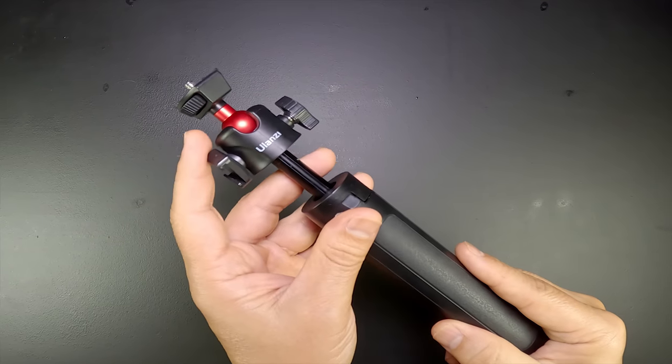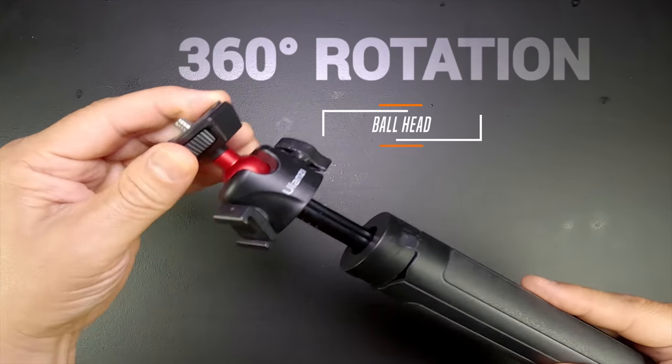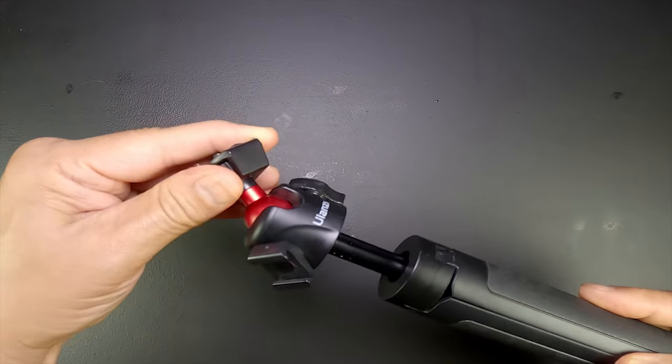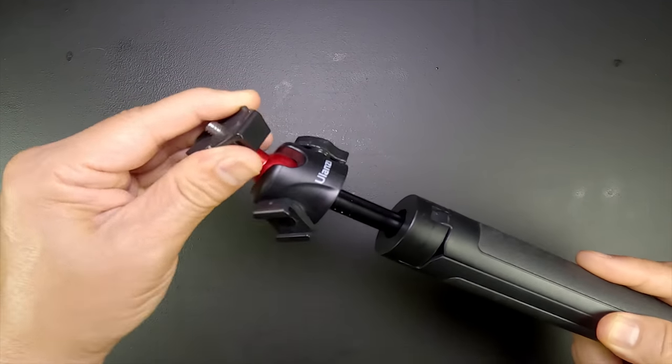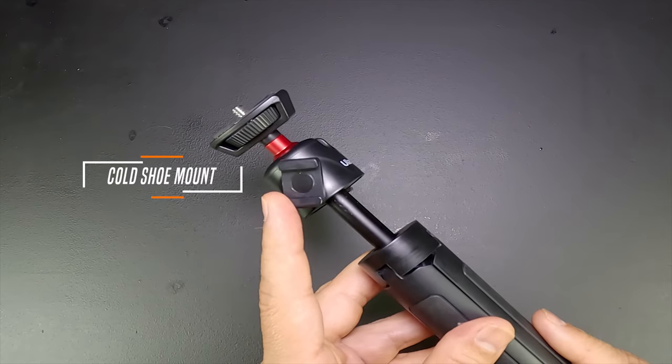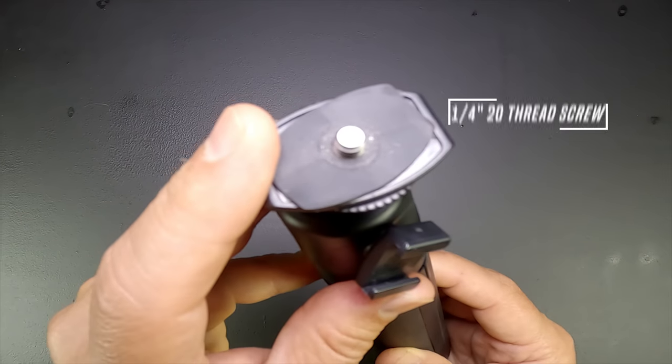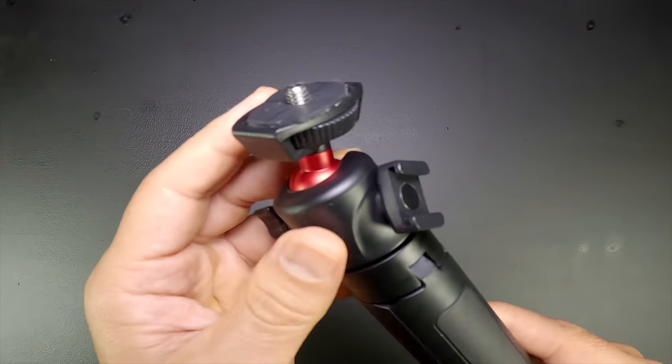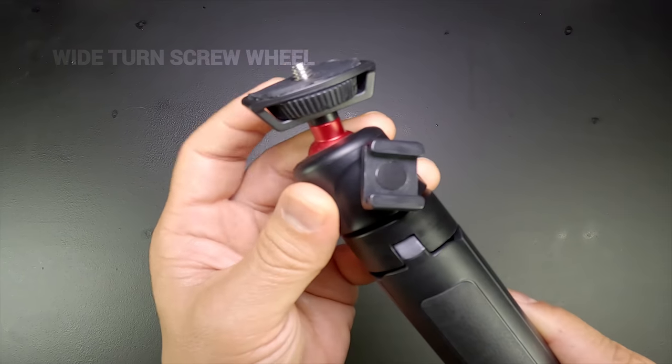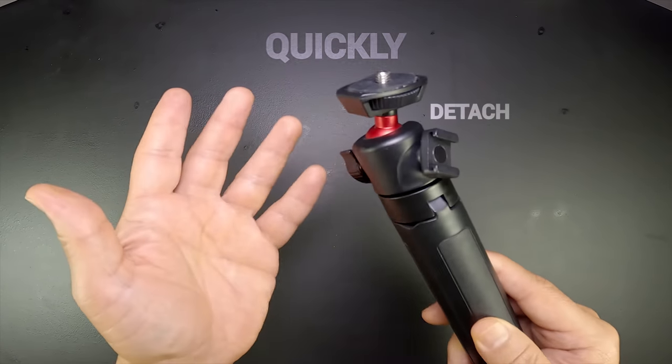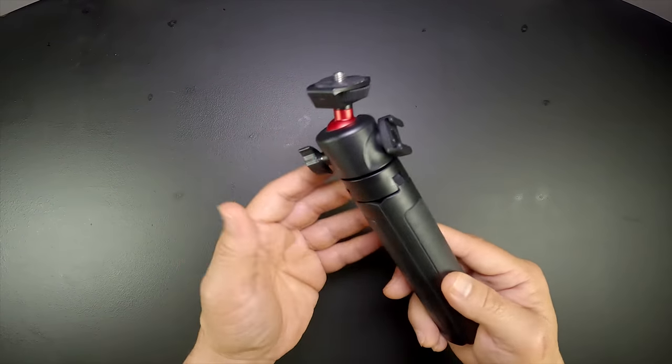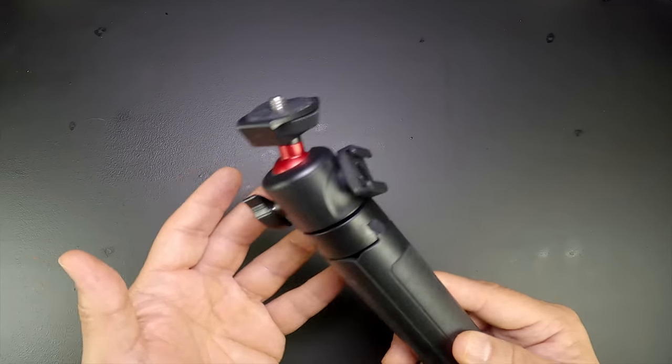The ball head has a 360-degree rotation so you can adjust to most angles for that creative shot. This cold shoe mount is great for a mic or a small light. You get a quarter-20 screw with a nice wide screw wheel so you can quickly attach or detach your action camera, light, camera, or a phone mount adapter for your smartphone.